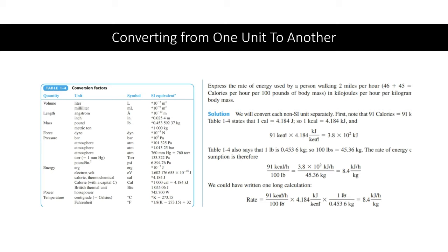Let's do this problem: express the rate of energy used by a person walking two miles per hour, which is 91 calories per hour per 100 pounds of body mass, in kilojoules per hour per kilogram of body mass. Just a note — the 91 calories here is the same thing as 91 kilocalories, because food calories, if you do a little bit of searching online, are actually kilocalories. So just remember that.